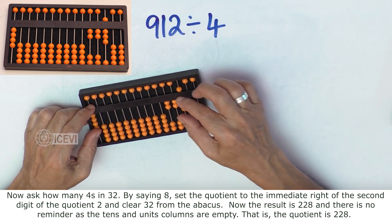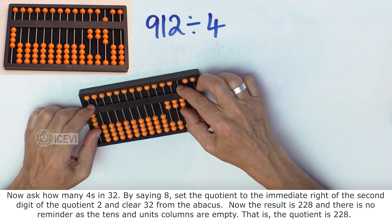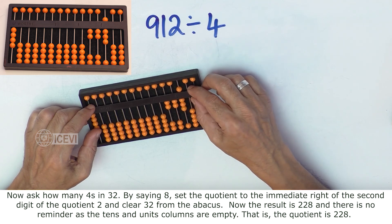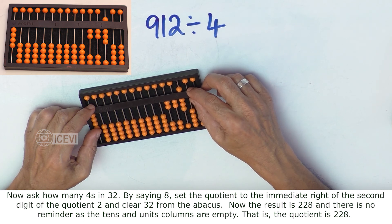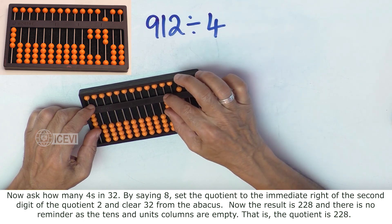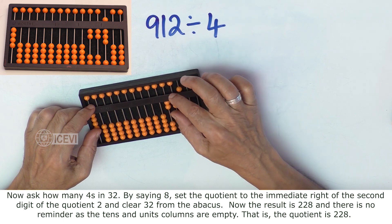Now the result is 228 and there is no remainder, as the tens and units columns are empty. That is, the quotient is 228.